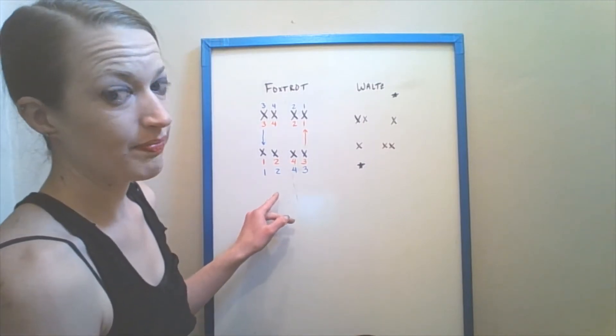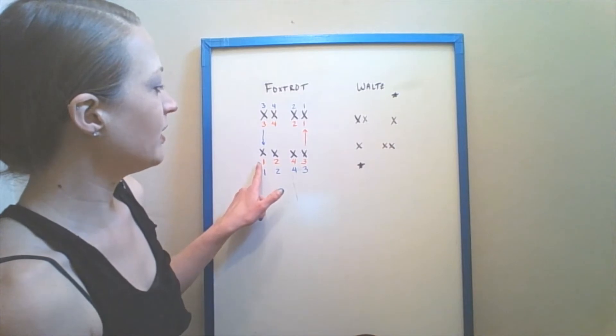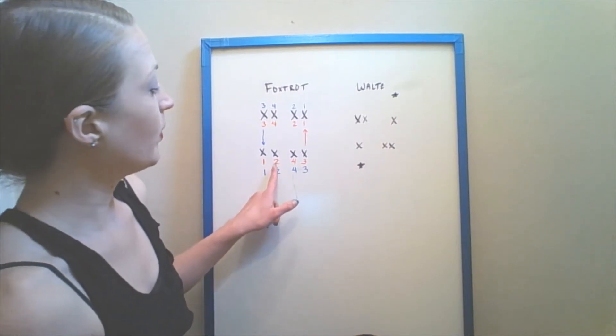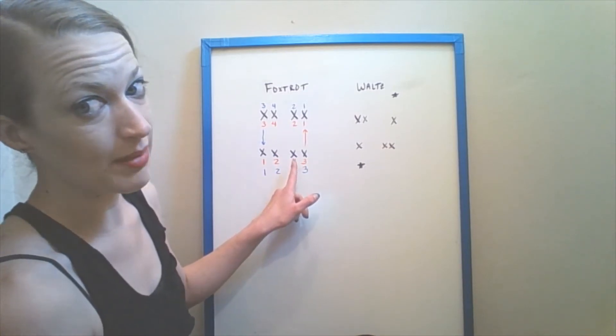So starting with our leader's perspective. If our starting point is here, we step forward with our left foot on count one. We bring our right foot in on two, we step side three, four. So that's the same basic step that we've learned.